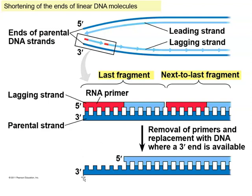If you notice, your parental strand has a 3' end here and a 5' end there. DNA polymerase cannot initiate synthesis at the 5' end — it needs the 3' end. So it cannot begin the synthesis, which means this part of the DNA is not going to be finished.